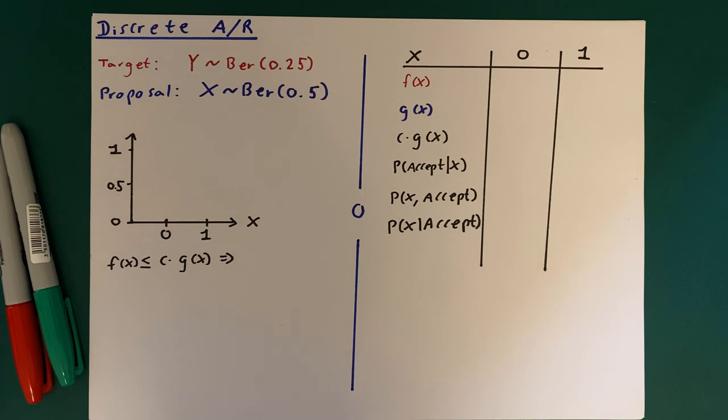Okay, so in this short video I'll describe the discrete acceptance-rejection algorithm. It's pretty much identical to the continuous case, and the main point of this video is really just to illustrate it in a setting with perhaps a little bit simpler math.